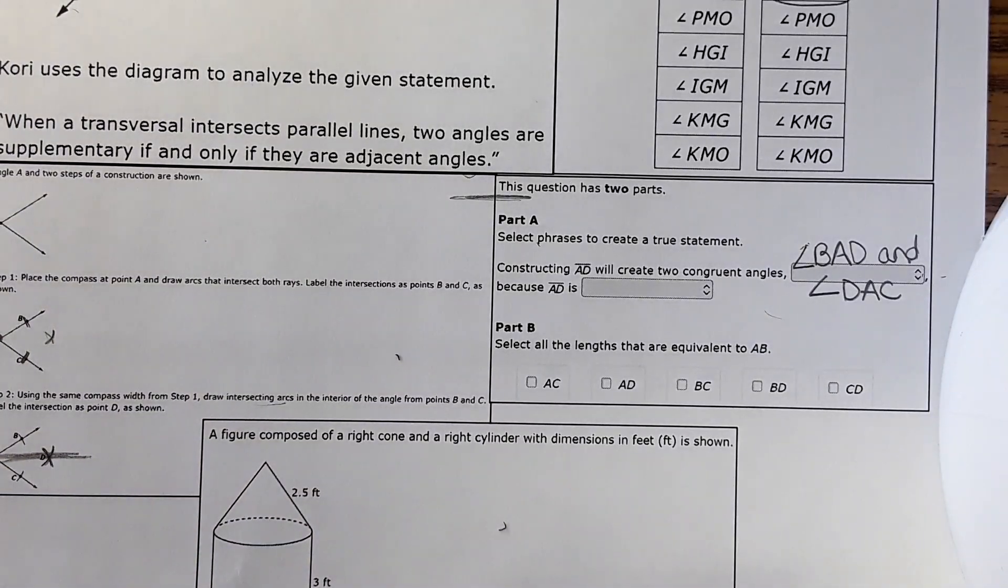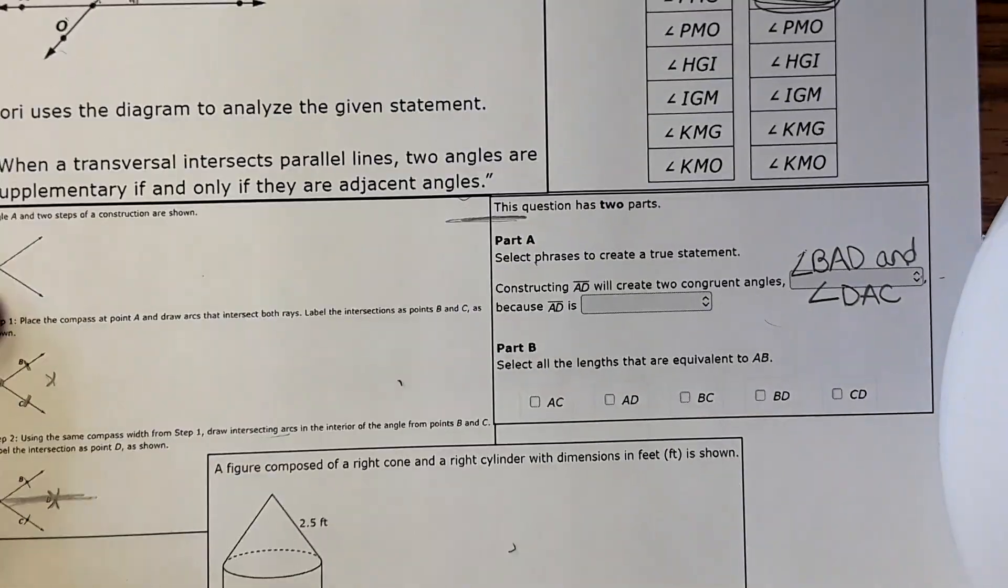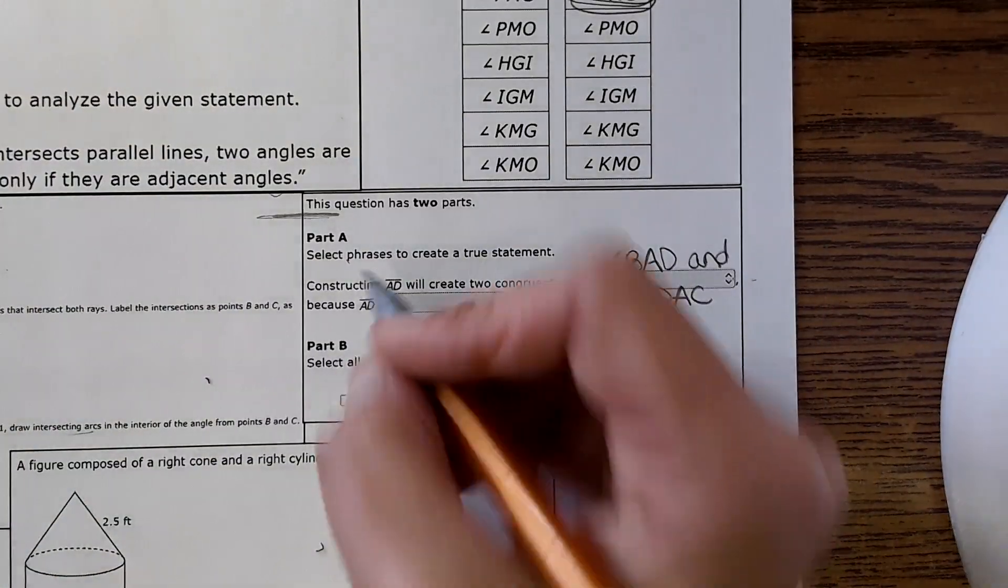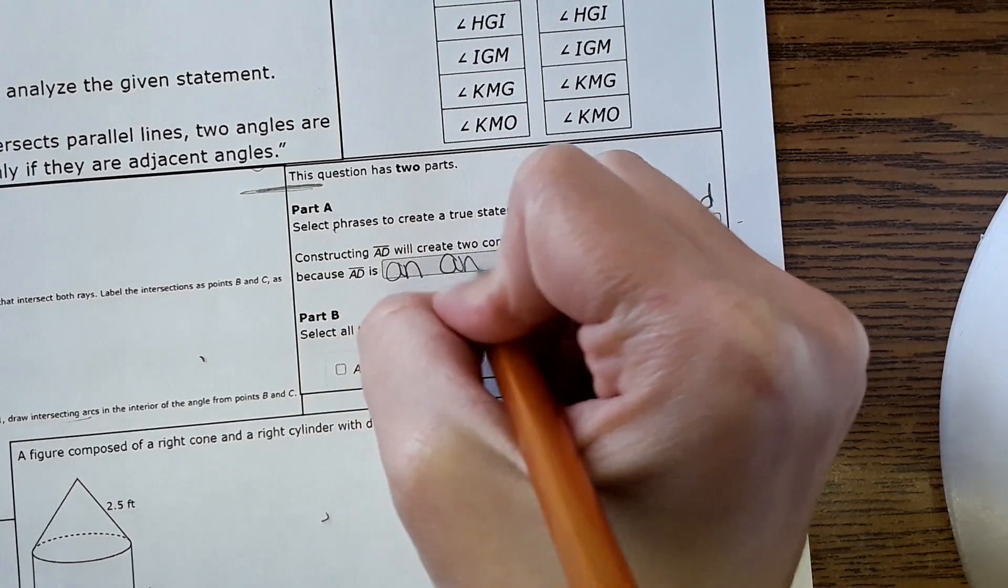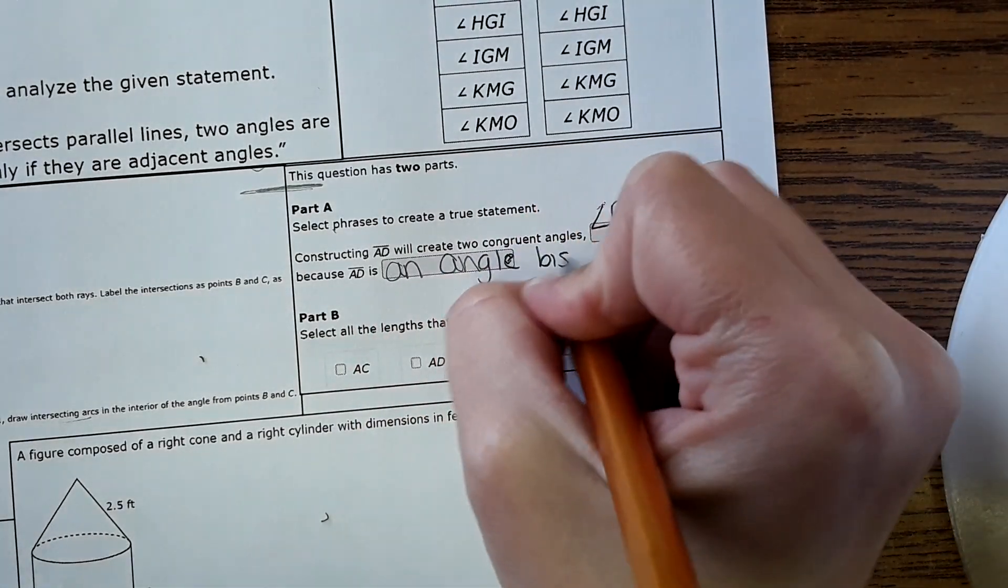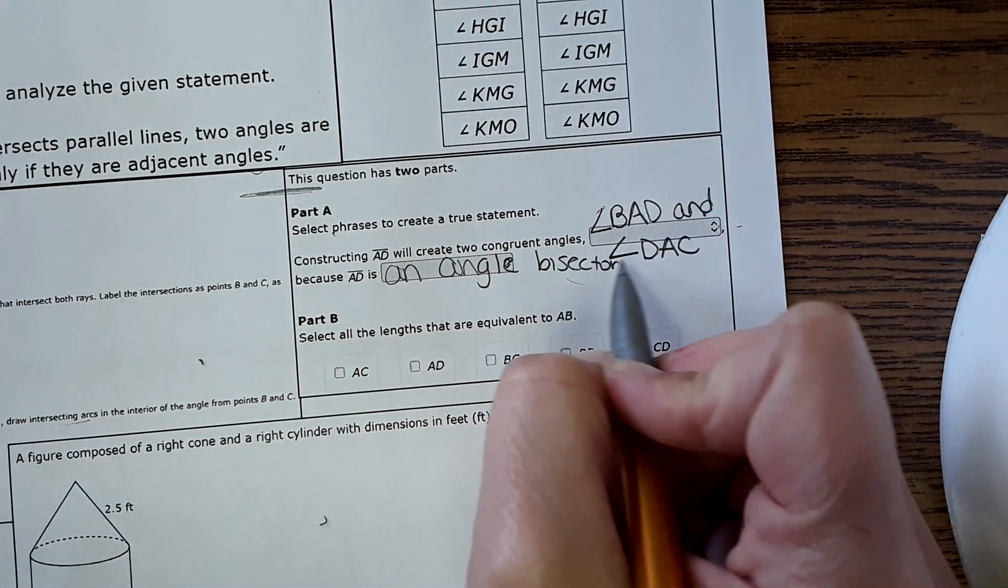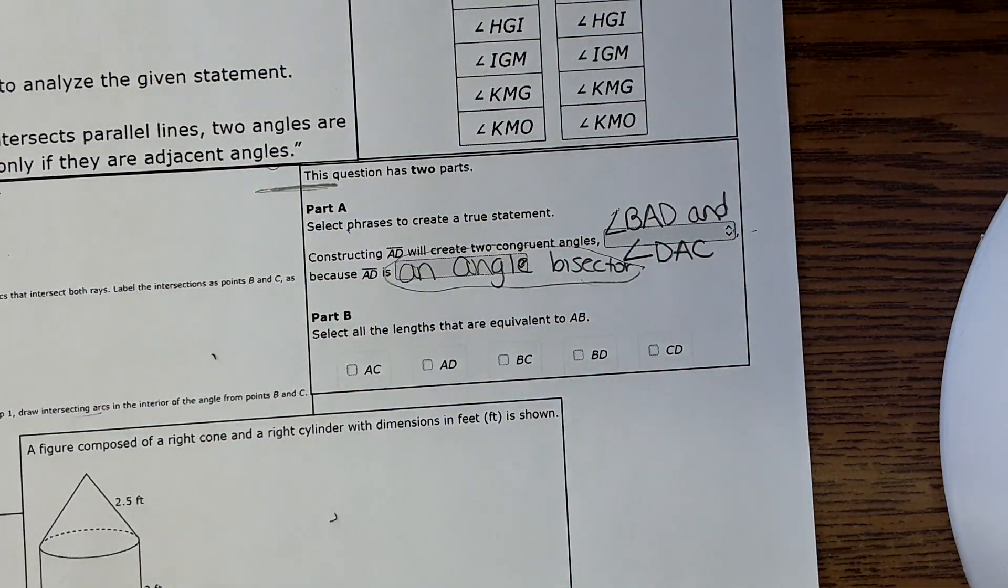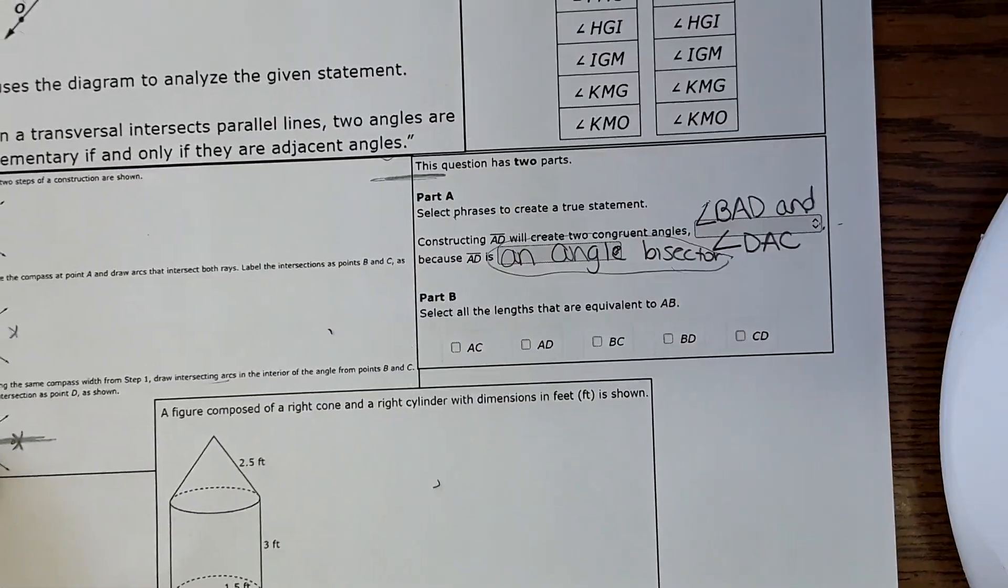It could say CAD but just identifying that bottom portion. The next one says because AD is what. Well in this thing AD right here is an angle bisector. You can also kind of hypothesize how this might be different on the test - maybe they do segment bisector or perpendicular bisector.